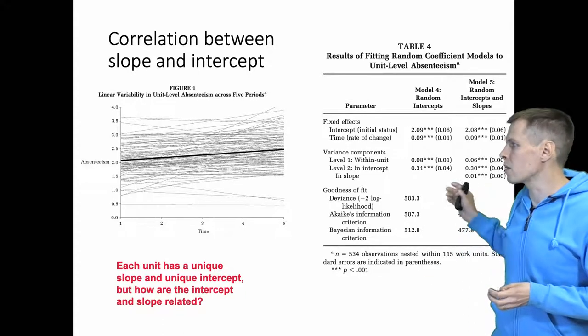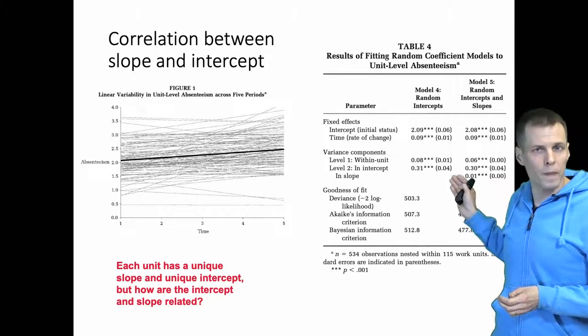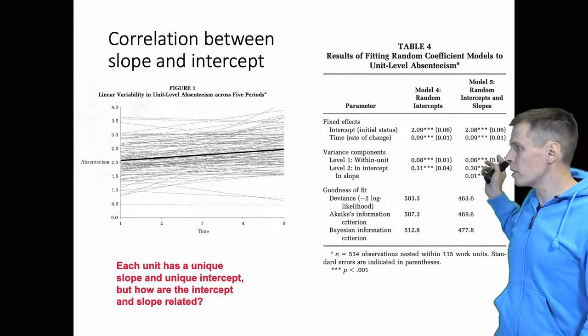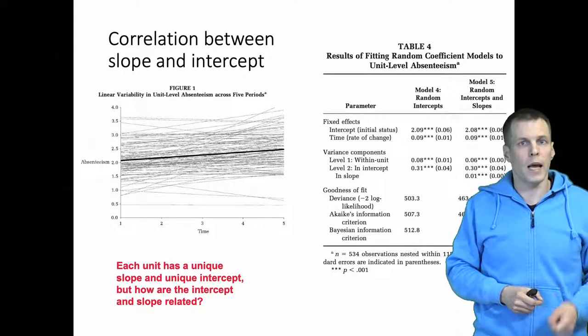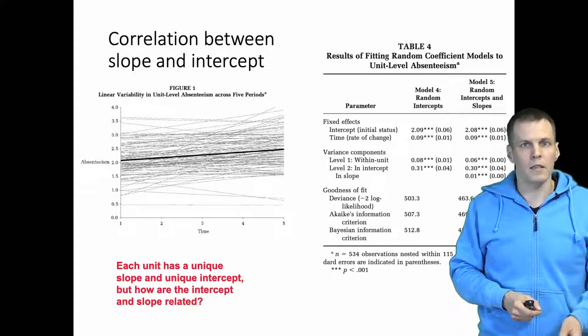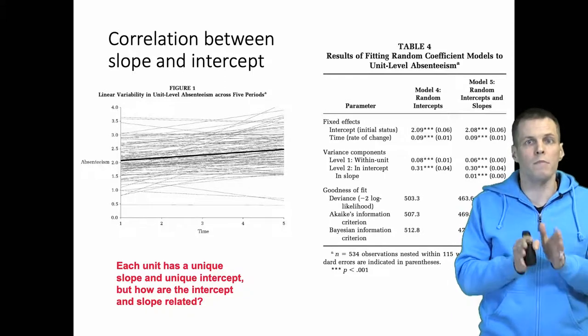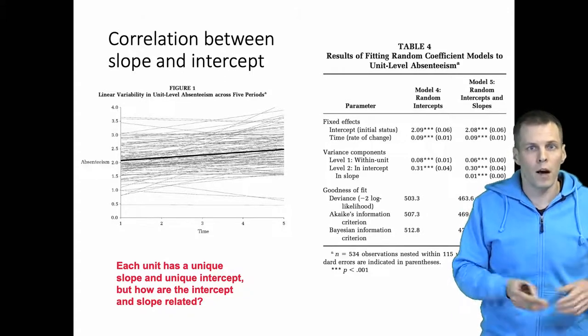The estimate includes four variance components: the within-unit, and three variance components for level two. They have the slope variance, the intercept variance, and then a covariance between slope and intercept.